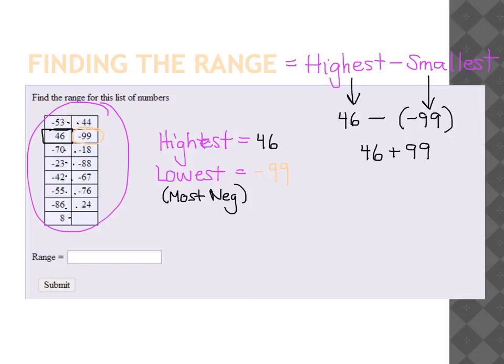Mentally, in my head, I actually changed that 99 to 100. And that 46 to 45, so the 99 kind of borrows one from the 46. So I know that the answer is 145. Okay? So your range would be 145. That means that you basically have like 145 integers between 46 and negative 99, or between negative 99 and 46.